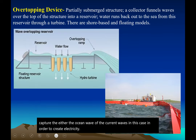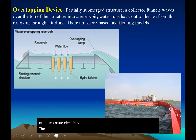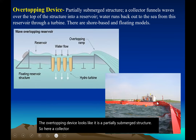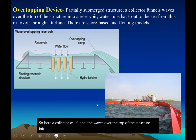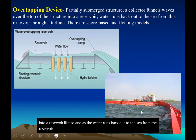The overtopping device is a partially submerged structure where a collector funnels waves over the top of the structure into a reservoir. As the water runs back out to the sea from the reservoir, it turns a turbine that makes electricity.